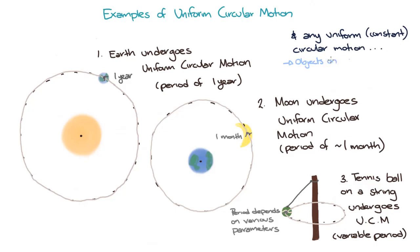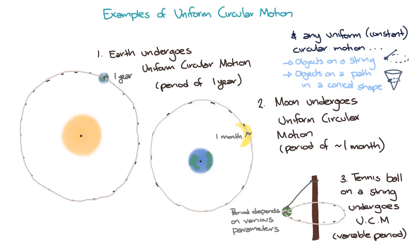You can easily demonstrate this to yourself. Objects travelling along a path on the interior of a cone can also undergo uniform circular motion if they are travelling at a constant speed. Finally, another example is a car on a circular racetrack. If the car is travelling at a constant velocity on a circular racetrack, then it is undergoing uniform circular motion.